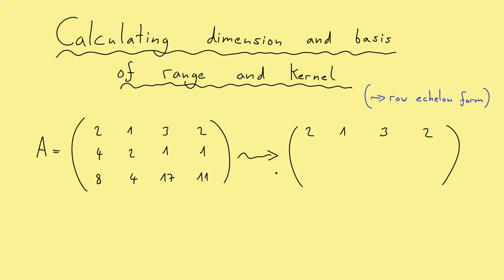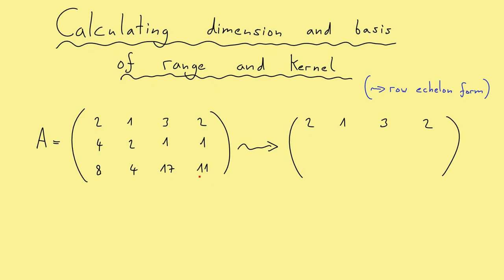First you copy the first row in the matrix, because this is the row we want to start operating with. You want to generate zeros in the first column, which means we want to eliminate first the 4 here, and then the 8 here. So we take the second row and subtract 2 times the first row to get a zero here. What we get is then first a zero, then also a zero, then we subtract minus 6 so we get minus 5 here, and there we get minus 3.